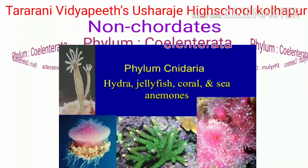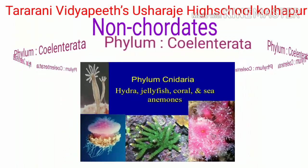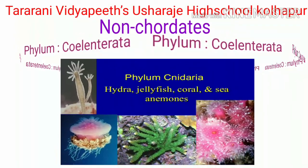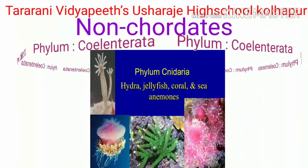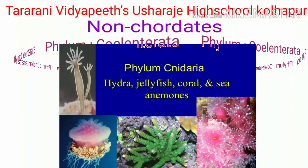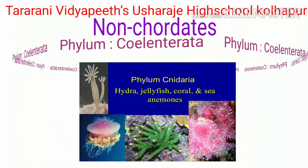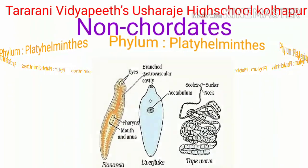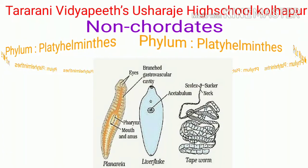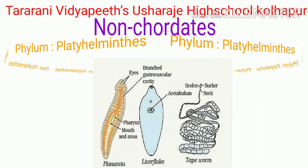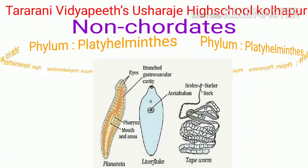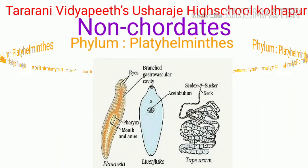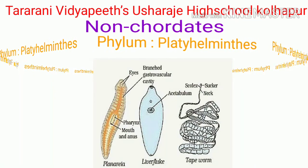Examples of phylum Coelenterata are: Hydra, sea anemone, Physalia (the man-of-war), Aurelia (jellyfish), and corals.